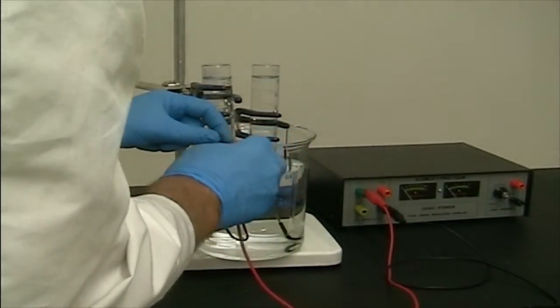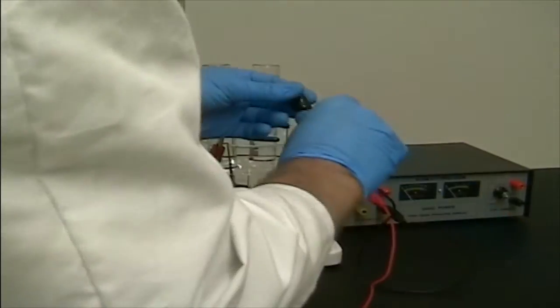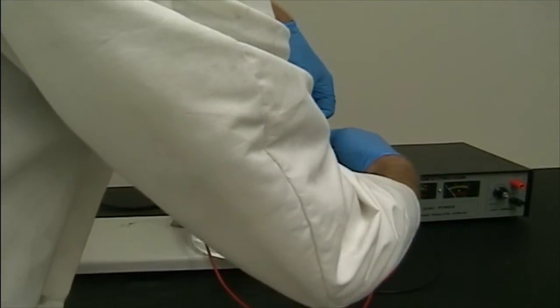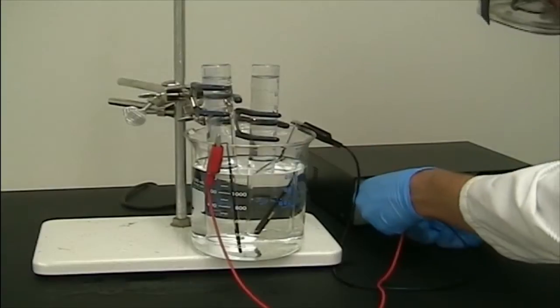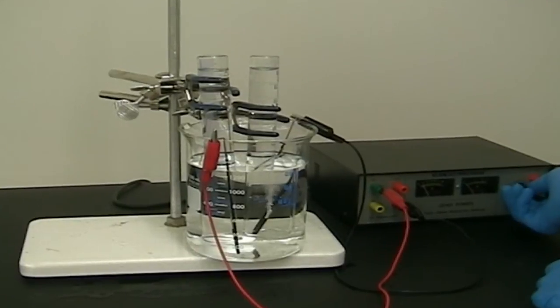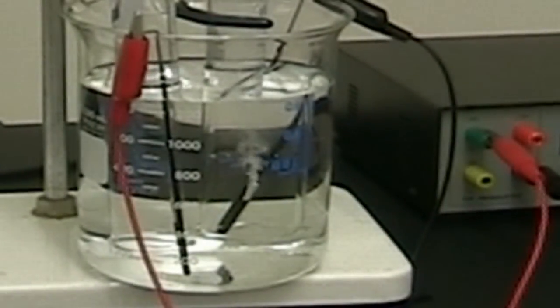One end of each alligator lead wire was attached to the exposed electrodes, and the other end to a quad-power four-linear regulated power supply box. The power supply box was plugged in and turned on, and gaseous evolution was instantly observed from the submerged electrode's termini at the base of each graduated cylinder.